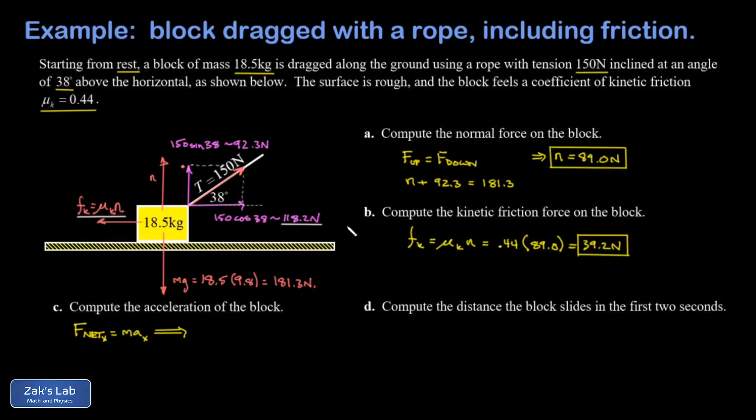So my net force is 118.2 minus 39.2 and that's equal to the mass of this object, 18.5 kilograms, times the unknown acceleration. We crunch the numbers, we do the subtraction and then divide by 18.5.